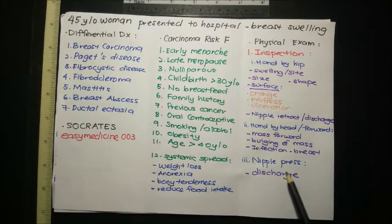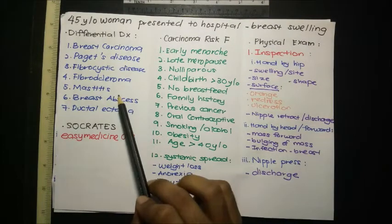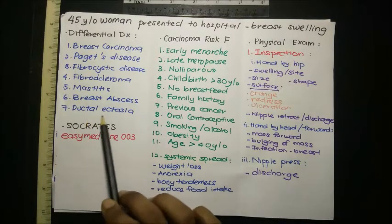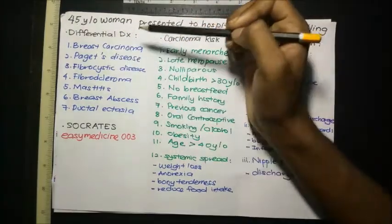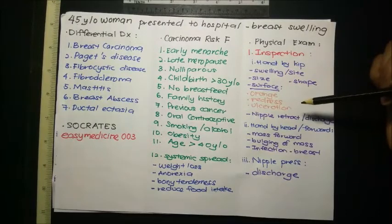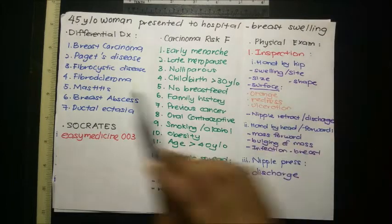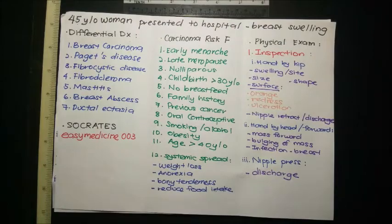Ask the patient to perform a nipple press to look for discharge. The color of discharge is very important: purulent discharge is seen in mastitis or breast abscess; green or oily discharge suggests ductal ectasia; bloody discharge is suggestive of breast carcinoma. If the nipple surface looks like eczema, this is suggestive of Paget's disease, which has underlying breast carcinoma.